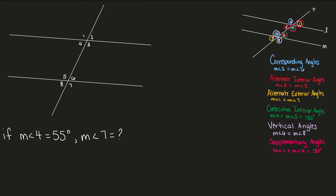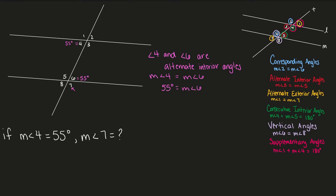Lastly, if the measure of angle 4 is 55 degrees, then what is the measure of angle 7? Again, we'll have to do this in multiple steps. First, angle 4 and angle 6 are alternate interior angles, and alternate interior angles are congruent. So if the measure of angle 4 is 55 degrees, then the measure of angle 6 is also 55 degrees. Angle 6 and angle 7 are supplementary angles, so angle 6 plus angle 7 will equal 180, and angle 7 will equal 180 minus angle 6. Therefore, the measure of angle 7 is equal to 125 degrees.